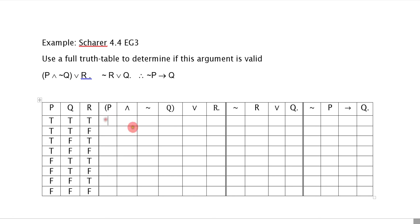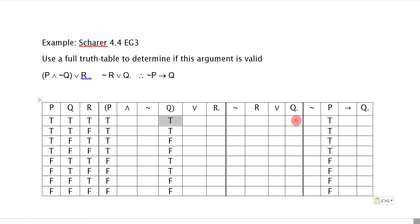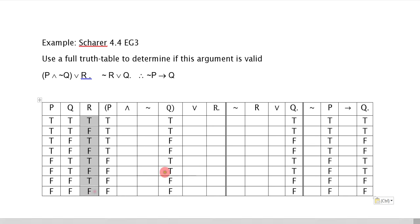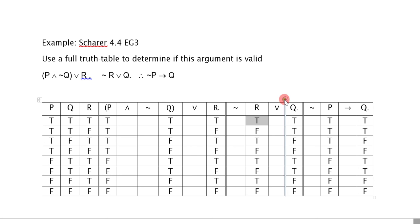The next thing to do is always just to copy out all your truth values for your atomics. I'm using a computer so this is much faster, but there's no real difference. If you do this by hand, just do this move immediately, and your truth table should look like this. At this point, I haven't really done any thinking — I'm just doing the automatic moves here.